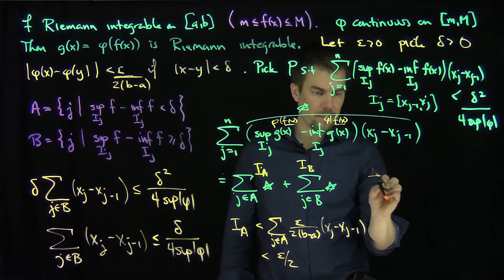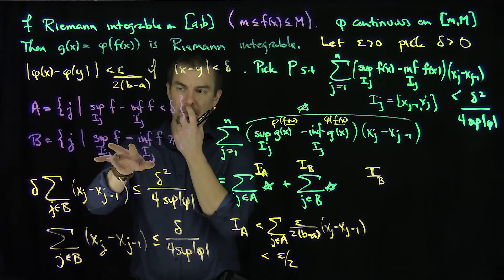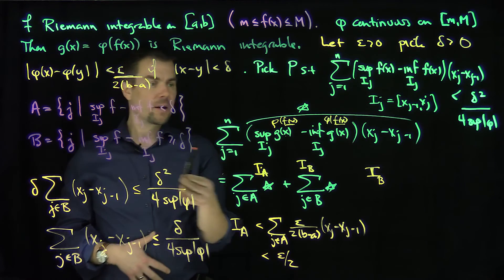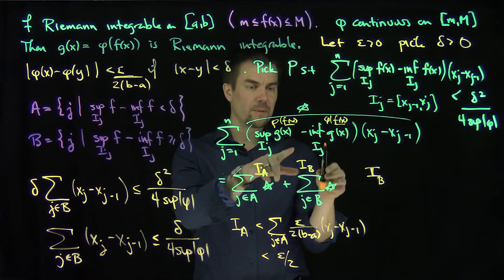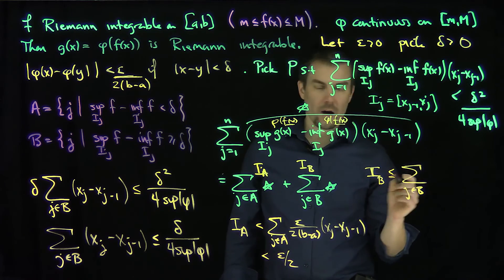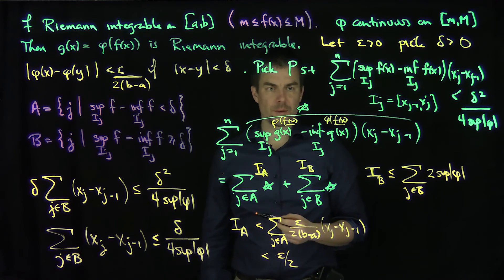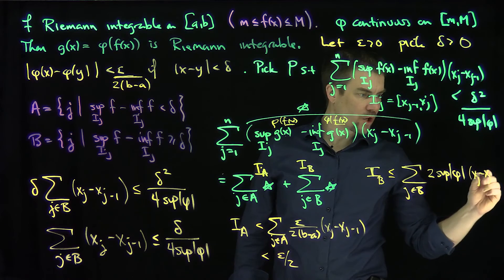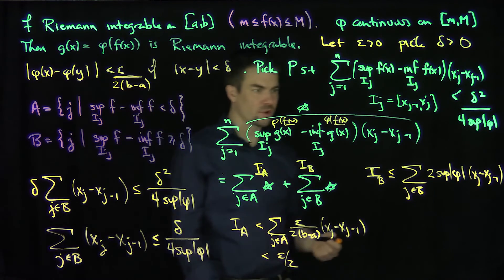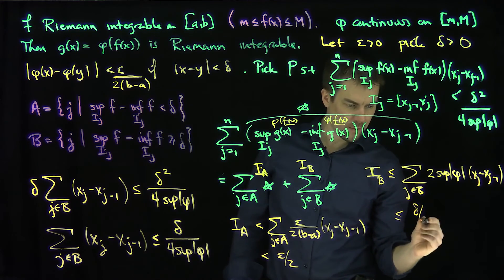For I_B: on set B the oscillation of f is not within delta, so we estimate the sup of g minus inf of g by its largest possible value. We get I_B is at most the sum over j in B of 2 times sup|phi| times (x_j - x_{j-1}). Since the total length over B is less than delta/(4 sup|phi|), this whole thing is less than or equal to delta/2.